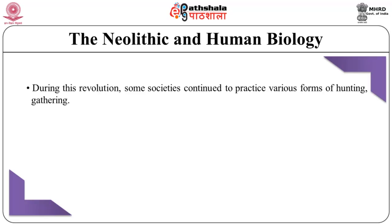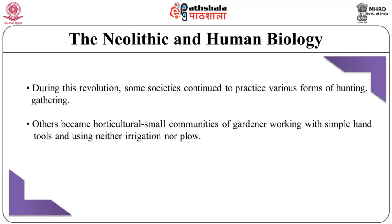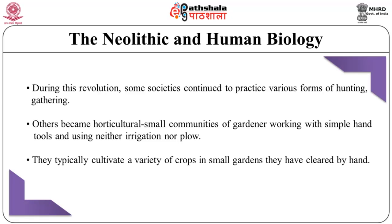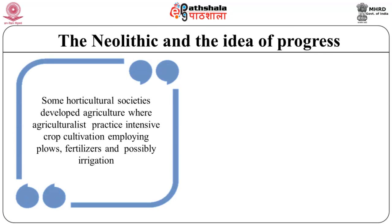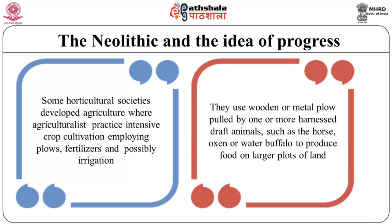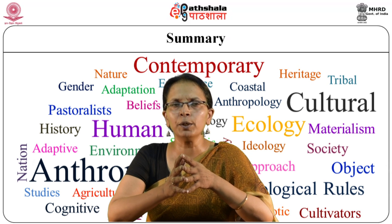During this revolution, some societies continued to practice various forms of hunting and gathering, while others became horticultural — small communities of gardeners working with simple hand tools, using neither irrigation nor plows, typically cultivating a variety of crops in small hand-cleared gardens. Some horticultural societies developed agriculture, where agriculturists practice intensive crop cultivation employing plows, fertilizer, and possibly irrigation. They use wooden or metal plows pulled by harnessed draft animals such as the horse, oxen, or water buffalo to produce food on larger plots of land.